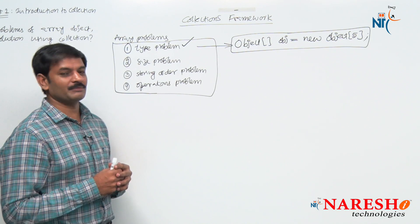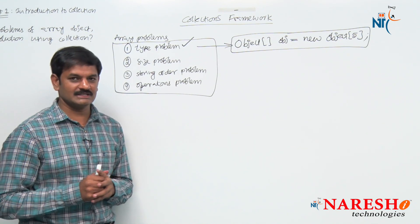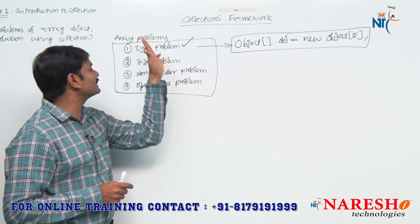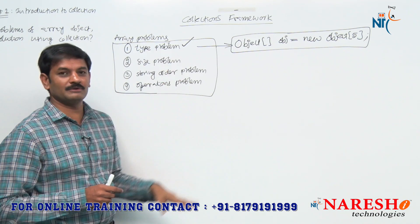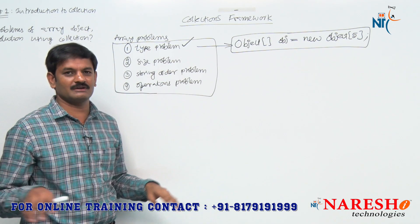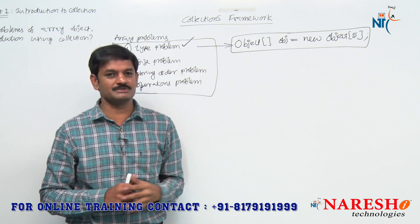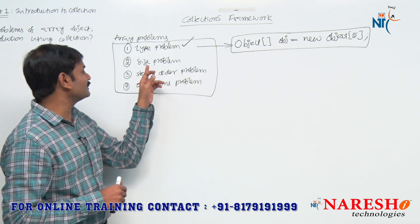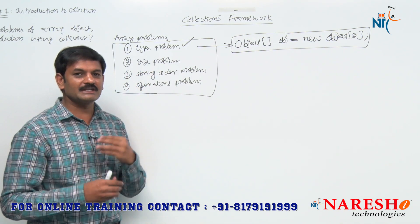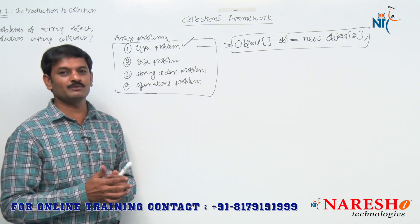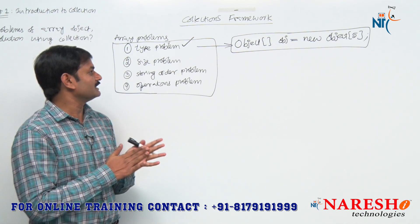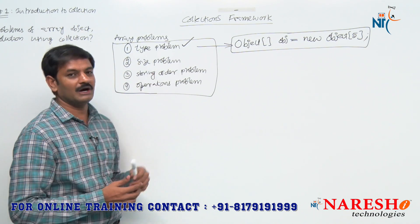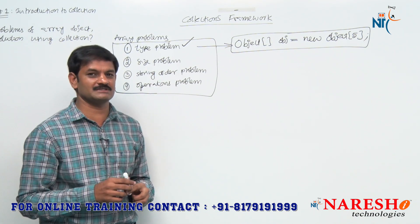So the point we concluded in the last session: if you only want to solve the array type problem, Collection API is not required at all. You can directly choose an Object array. Collection API mainly came for the size problem.